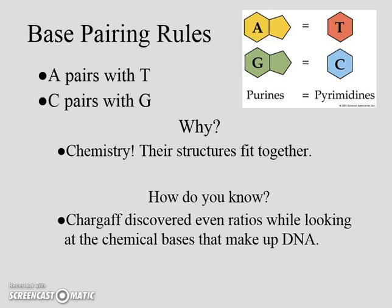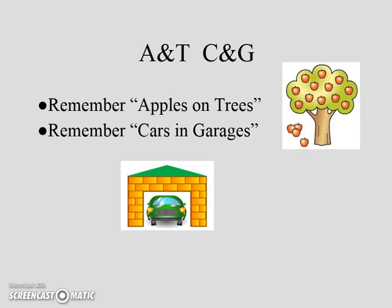Base pairing rules: A always fits with T — they're kind of like puzzle pieces. G always fits with C. Why? Chemistry. Their structures fit together. A lot of scientists came before us and were able to discover certain things like ratios. This one scientist named Chargaff discovered, while looking at the amount of each chemical, that A and T were always the same chemical ratio, and G and C were as well. A quick mnemonic: A, T, C, G — apples grow on trees and cars go in garages. So A and T go together, and C and G go together.